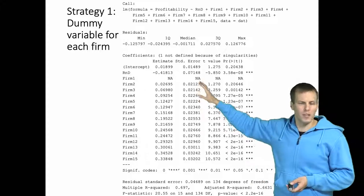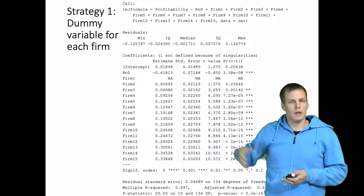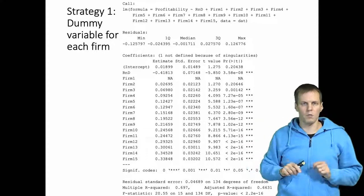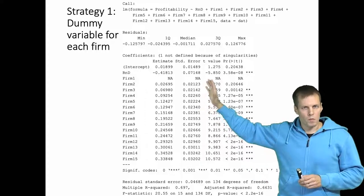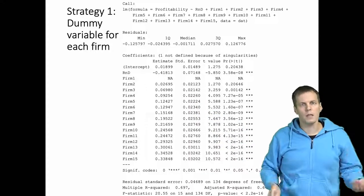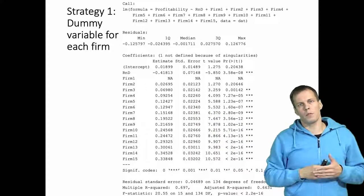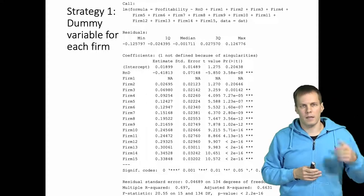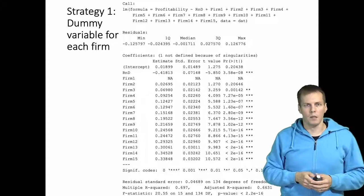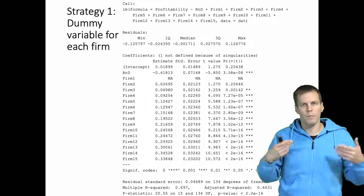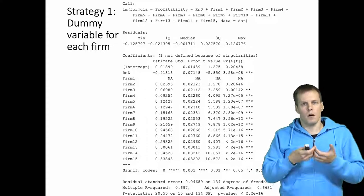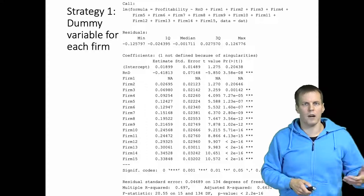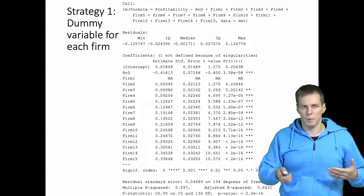Quite often we wouldn't interpret these dummies individually because there are quite a few of them, and typically we are not interested in specific cases — we are interested in how the regression line goes, controlling for the fact that we have data from multiple companies. This first strategy allows each company to have a specific intercept estimated from the data, while all companies share the same slope. Each company receives the same regression line except that the intercept can differ.